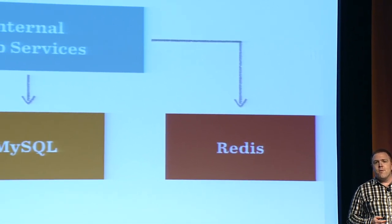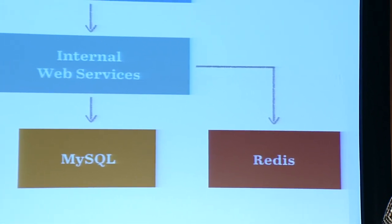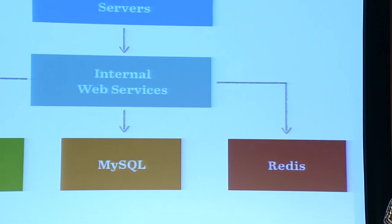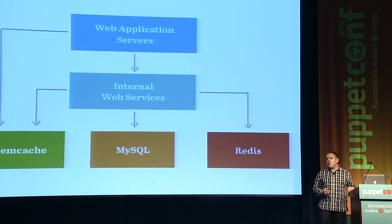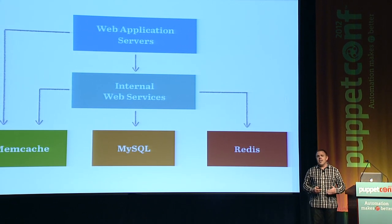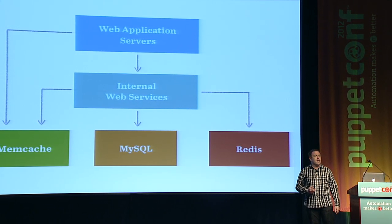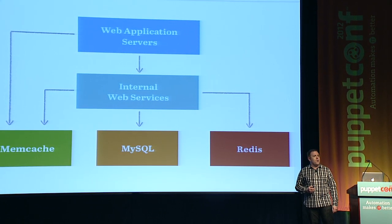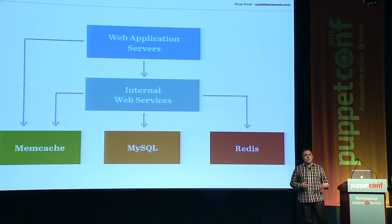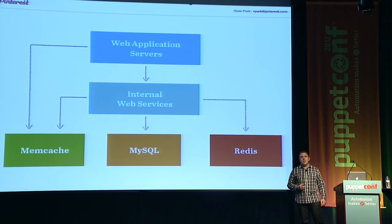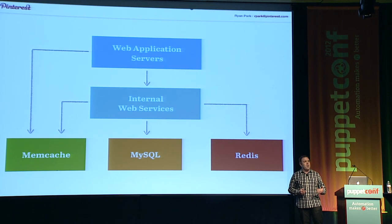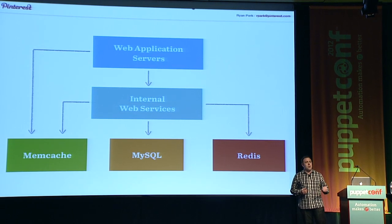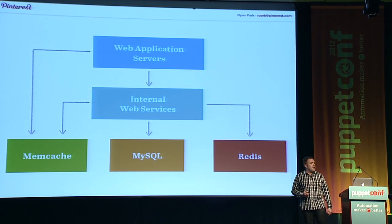All of our servers are virtual instances on Amazon's EC2 platform. We don't run any physical hardware — it's all entirely in Amazon's cloud. That's worked well for us and had some really interesting benefits and interesting challenges, especially when working with Puppet, which we'll go into a little bit later.